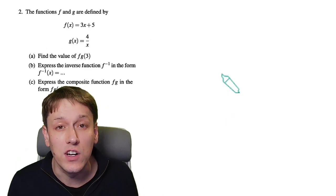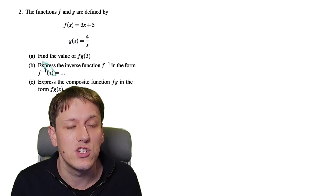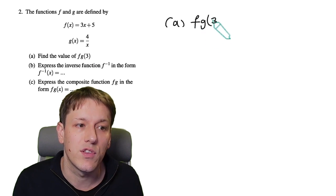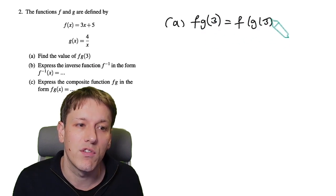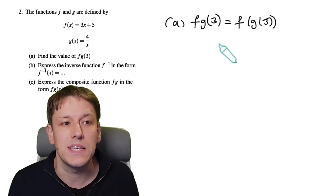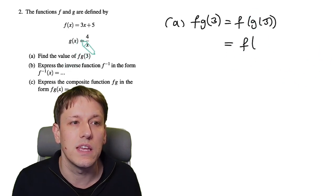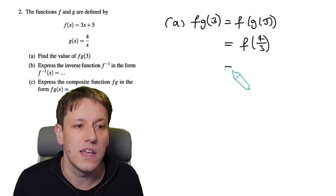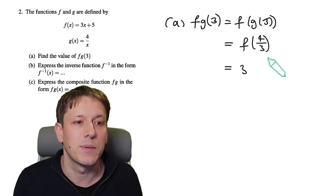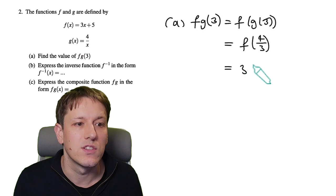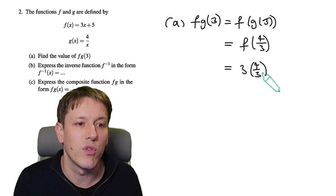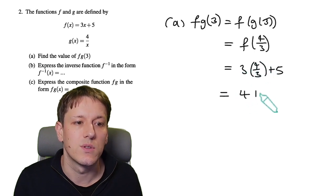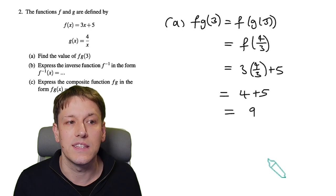Here's another tough functions question. I've got two functions f and g, and in part a I want f(g(3)) — that's a composite function. When you have fg(3) written like this, that means do f of (g(3)). Working from the inside out, g(3) = 4/3. Then f(4/3) = 3 × (4/3) + 5. The 3s cancel to give 4, so 4 + 5 = 9 as the answer.